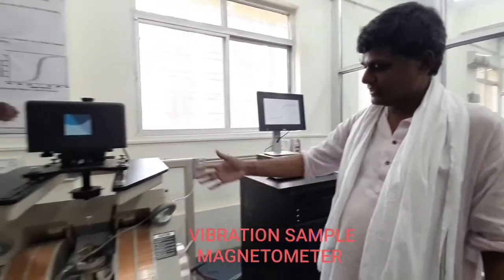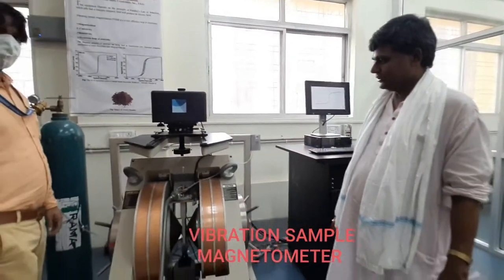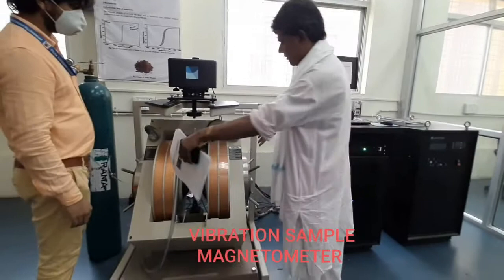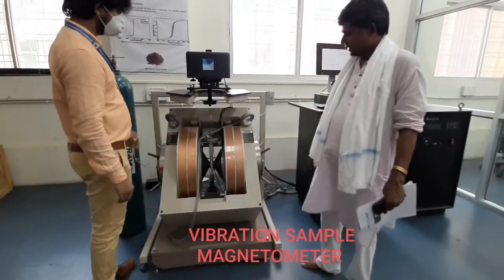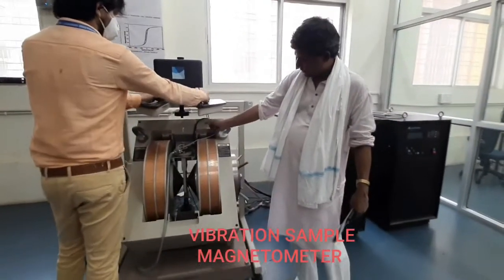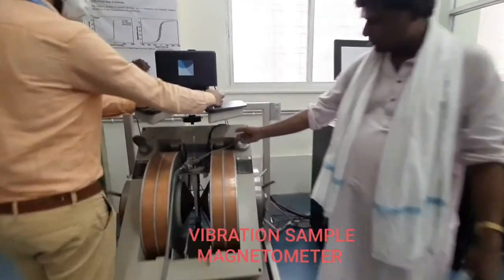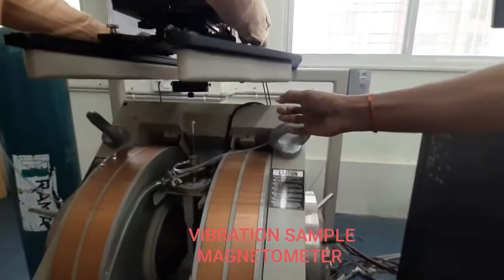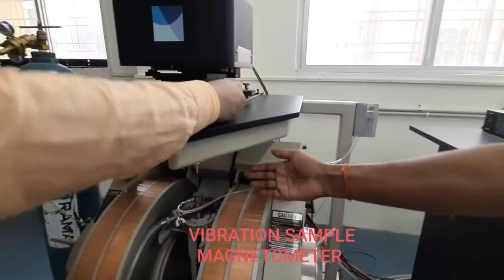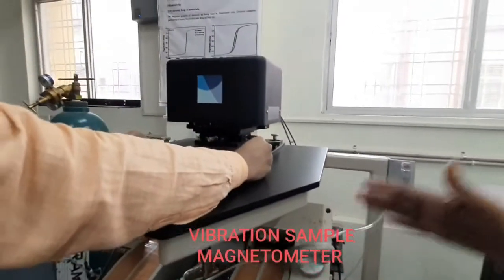This equipment is a vibrating sample magnetometer. There are two strong magnets in here, and this is the sample holder where you put the sample for magnetic measurements. The samples are connected to a screen.